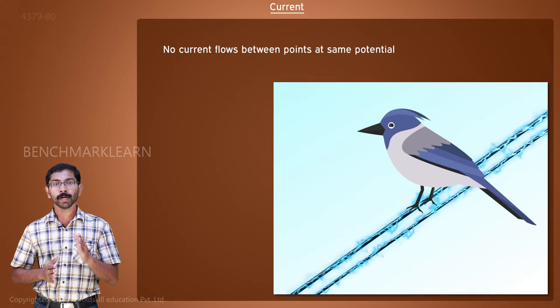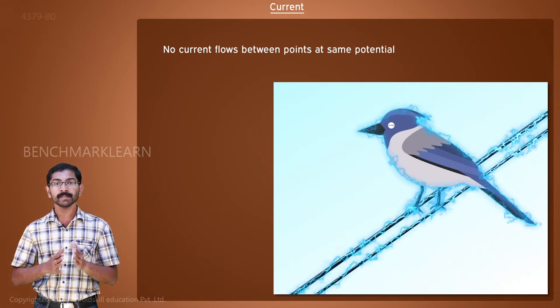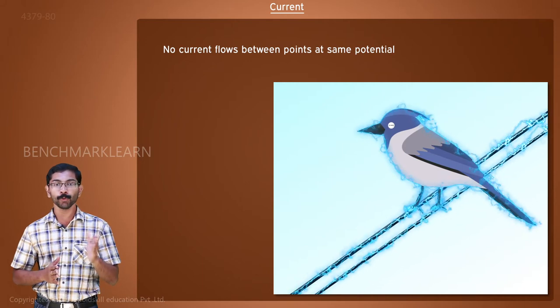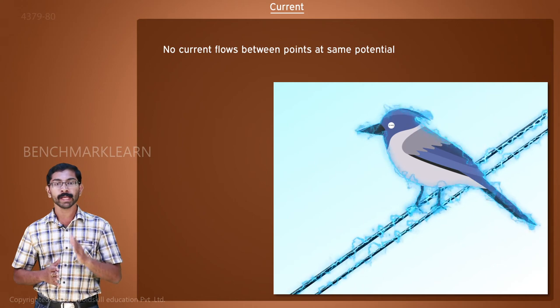But if any part of the bird accidentally touches another line, then there is a huge potential difference between two parts of its body. So, a current flows through its body, killing it.